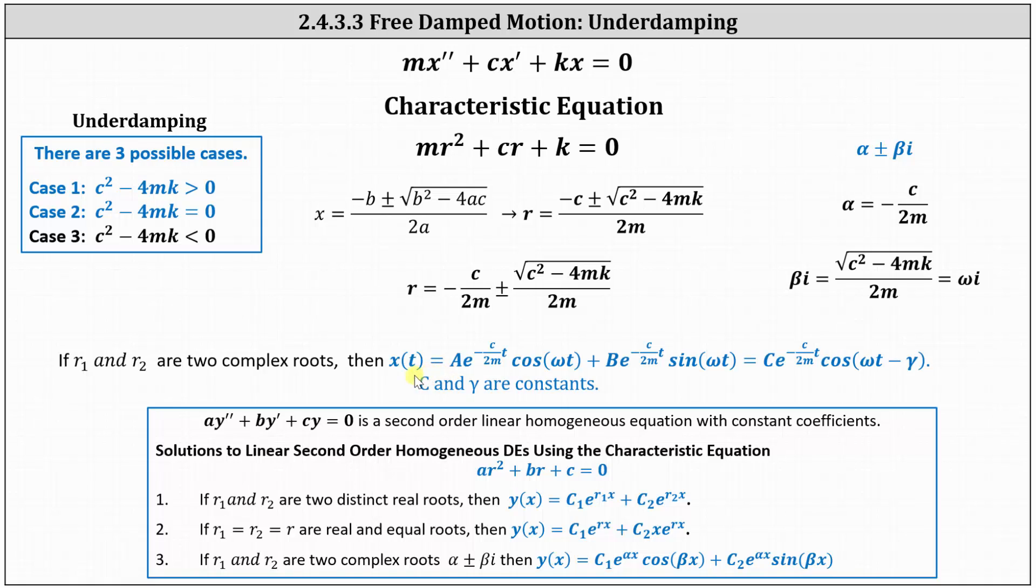Using trigonometry, this can also be written as c times e to the alpha times t times cosine of omega t minus gamma.